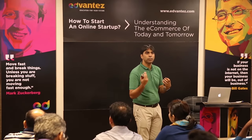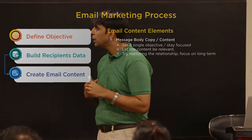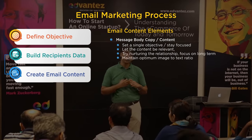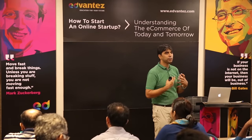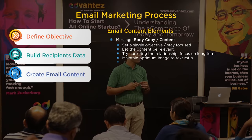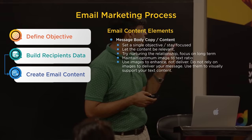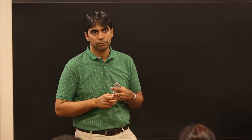Maintain an optimum image-to-text ratio. If your emails have too many images, they automatically go to spam. You have to maintain a balance — the more text you have, the better the chances of not landing in spam. Maintain images to enhance, not to deliver the message. Do not rely on images to convey your message; use them visually to support your text. In an email, text is what conveys the message; images are just support.